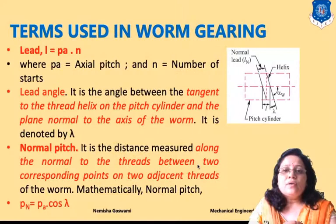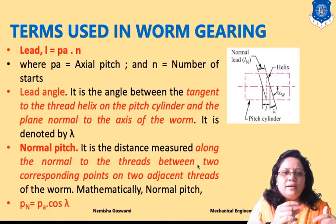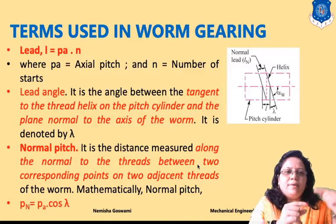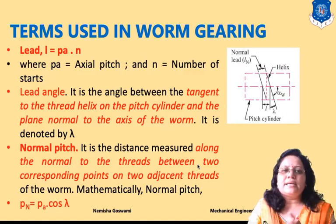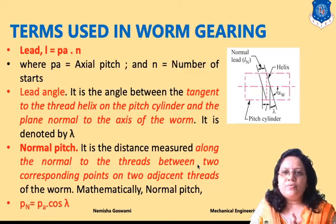The number of starts refers to how many times the worm thread completes a revolution — in other words, how many starts are present on the worm. Here, PA is the axial pitch and n is the number of starts.